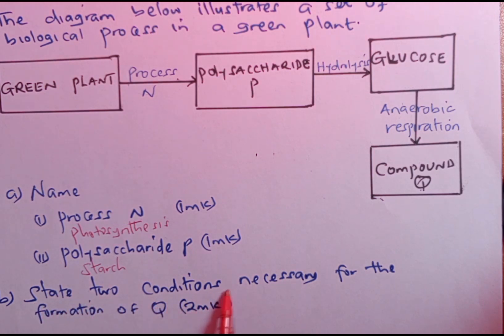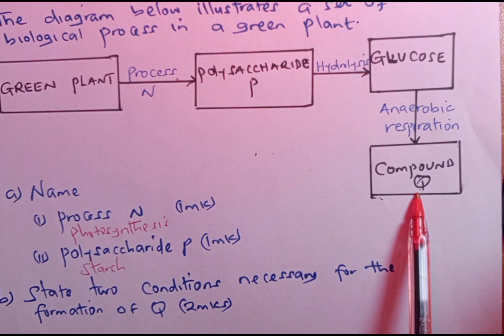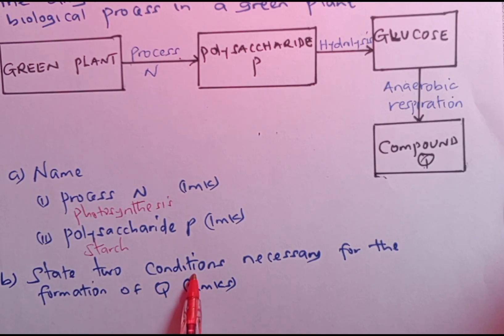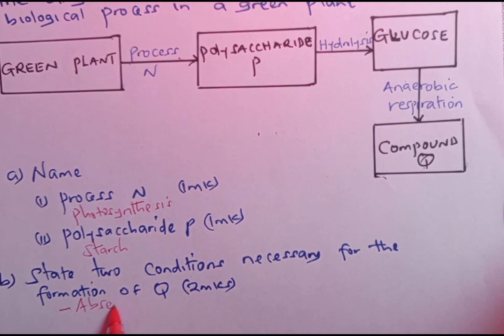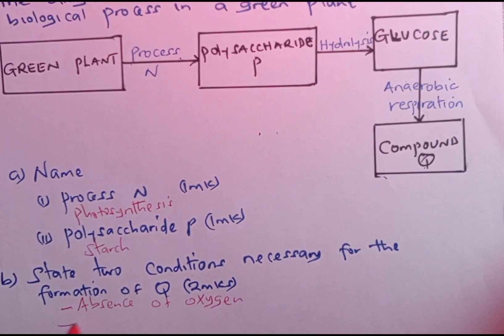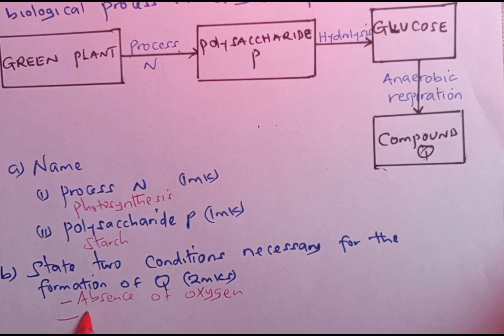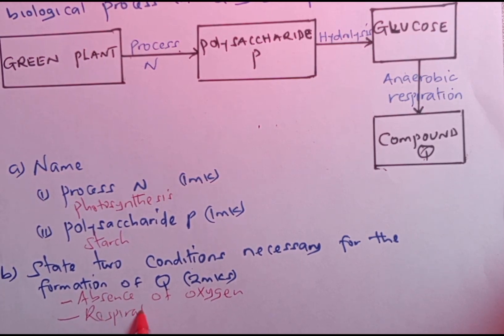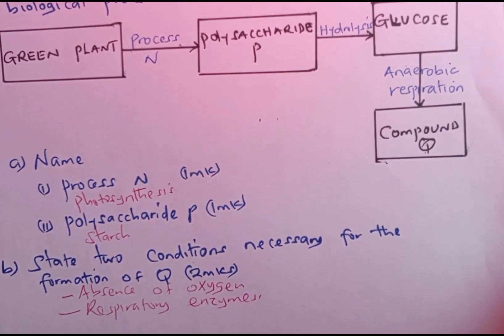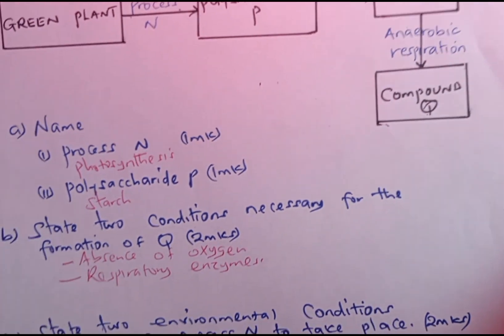Part B asks, state two conditions necessary for the formation of Q. Remember, Q is a compound known as pyruvic acid, which is formed due to anaerobic respiration. So one of the conditions under which Q will be formed: one, it is formed in the absence of oxygen. Then number two, it is formed in the presence of respiratory enzymes.